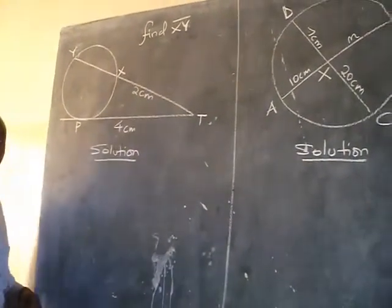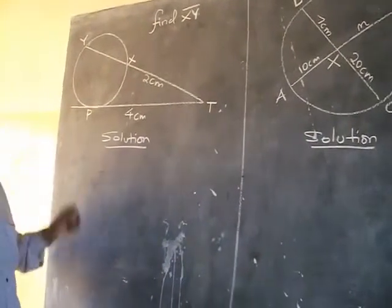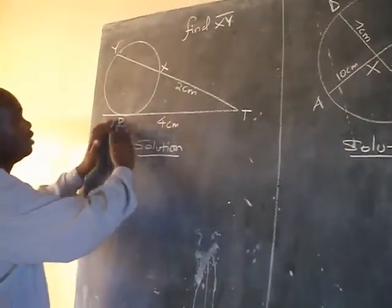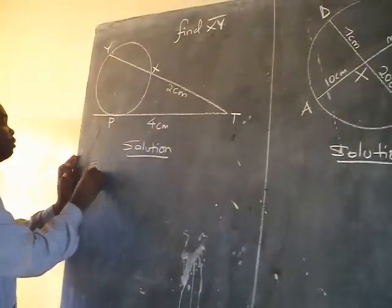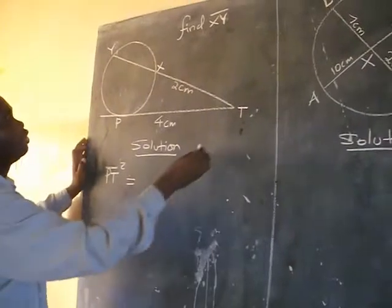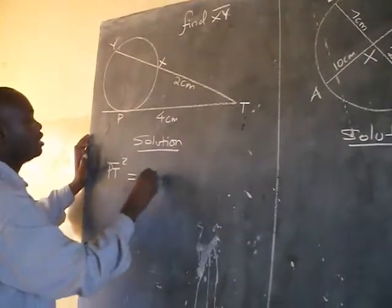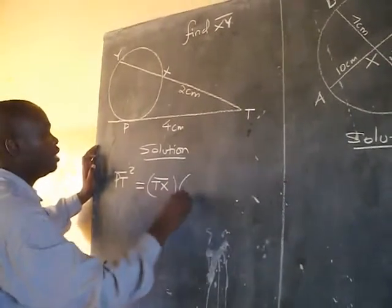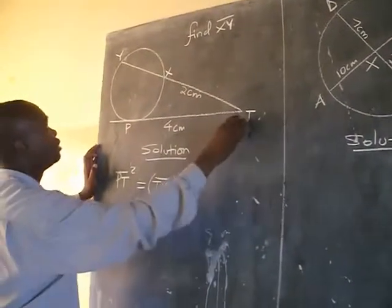Now to be able to solve this question we must apply the properties of the circle. And we have a rule which says this length, the PT squared, is equal to the length PX, this one here, multiplied by the length TY.